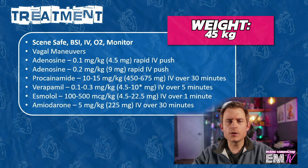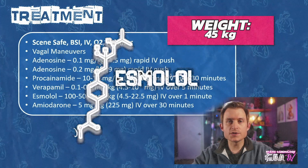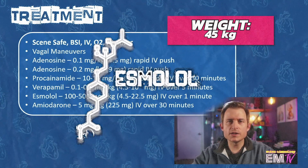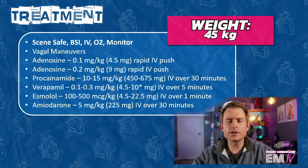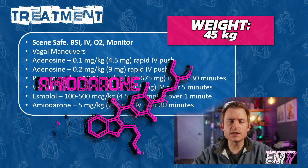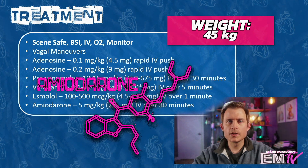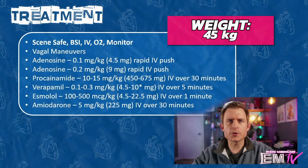This is given IV over 5 minutes. Another alternative is esmolol, which is a beta blocker, and this is given in doses of 100 to 500 micrograms per kg, which will work out to 4.5 to 22.5 mg given IV over a minute. And then if all else fails, the last resort medication for pediatric SVT is amiodarone. This is dosed at 5 mg per kg, or in his case, 225 mg given IV over 30 minutes.